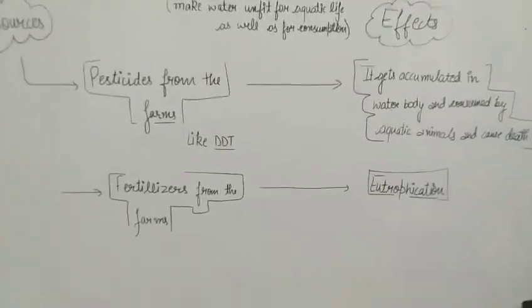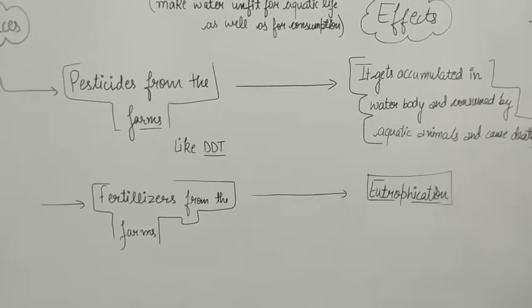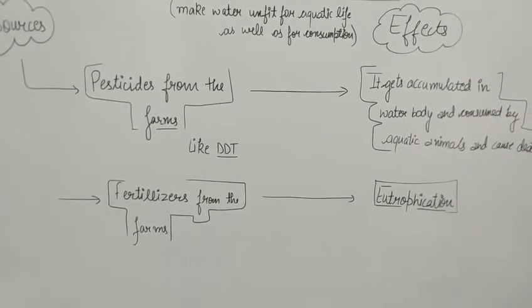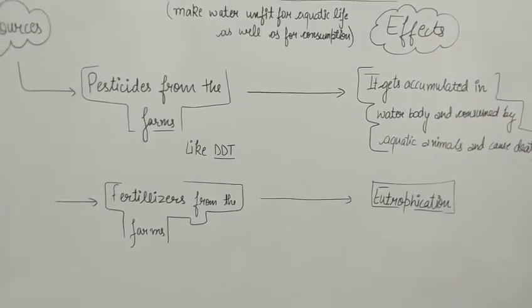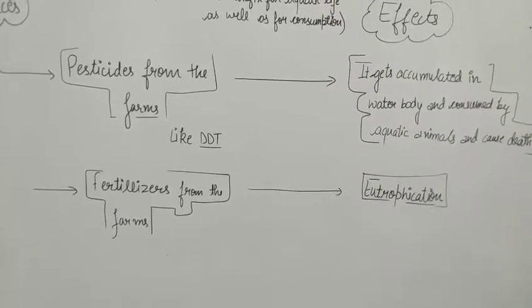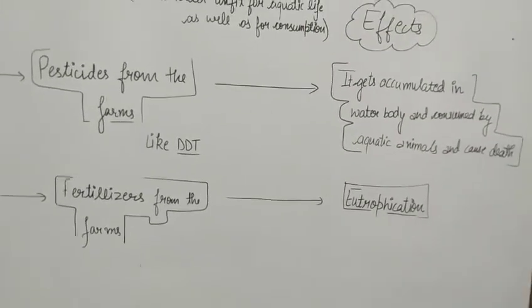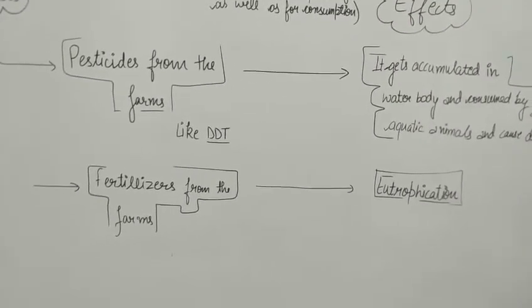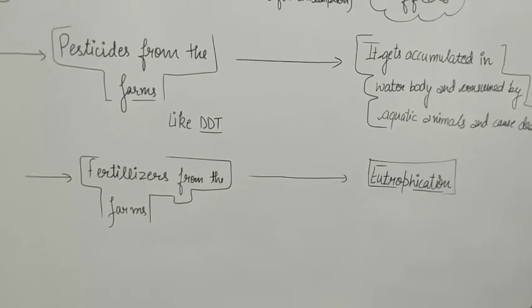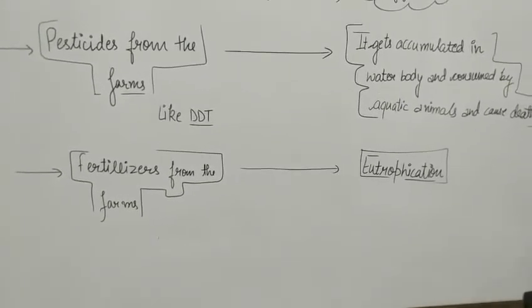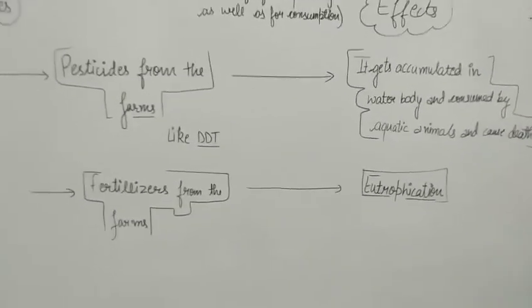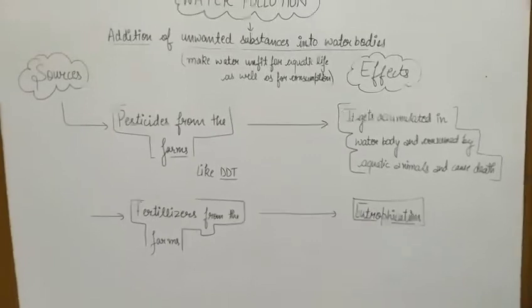In addition, in agricultural lands we also spray fertilizers. All these things we have studied in Chapter 1 under agricultural practices. Farmers use fertilizers and these also flow into water bodies. However, the adverse effect of fertilizers is different — these fertilizers cause eutrophication.